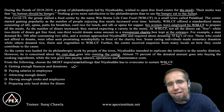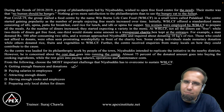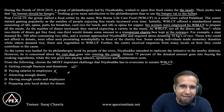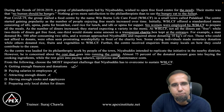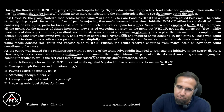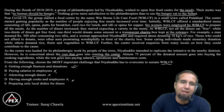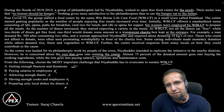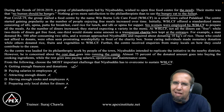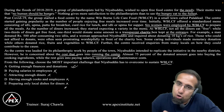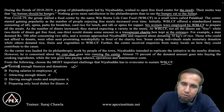Option B: paying salaries to employees — this is important, but it is a subset of option A; once I have enough finances I can pay salaries. Similarly, option C — attracting enough diners — is also a subset of the first option. Option D — having enough cooks and employees — will only be possible if I have enough finances and donations. Option E — preparing only local dishes — is definitely not the most important challenge. Managing finances and donations is the core challenge, so option A is the correct answer.